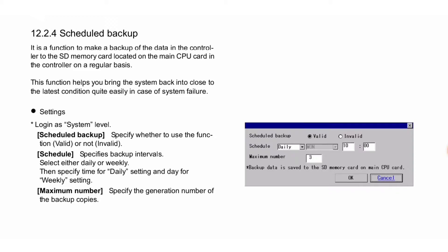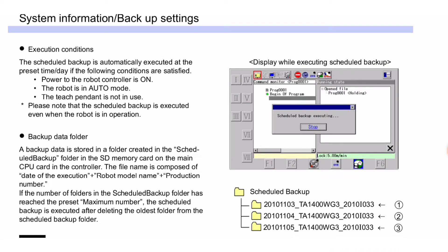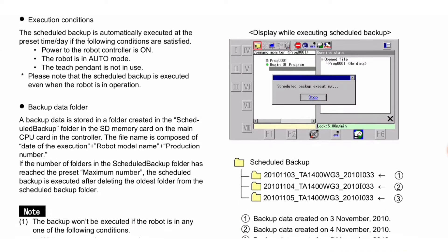Next is execution conditions. The scheduled backup is automatically executed at the preset time, with a delay time of one day, if the following conditions are satisfied: power to the robot controller is on, the robot is in auto mode, and the teach pendant is not in use. Note that the scheduled backup is executed even when the robot is in operation.